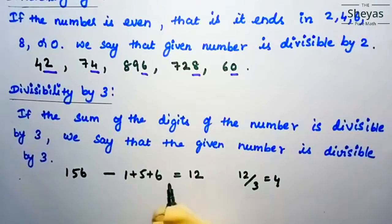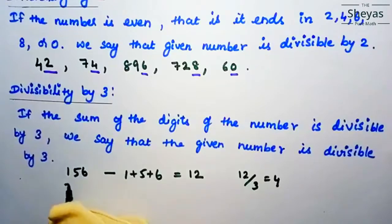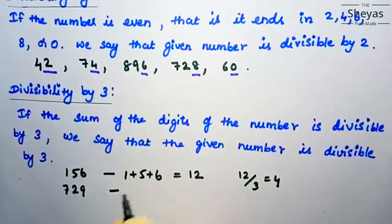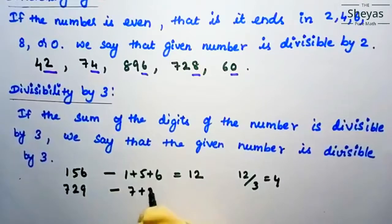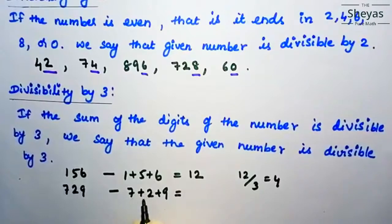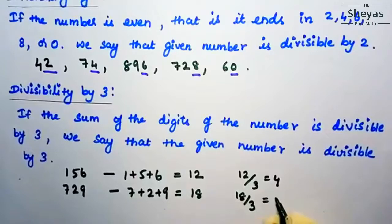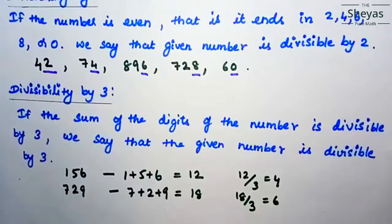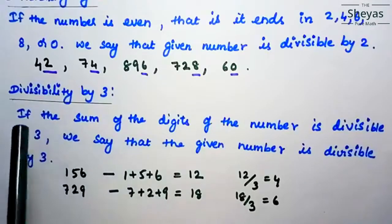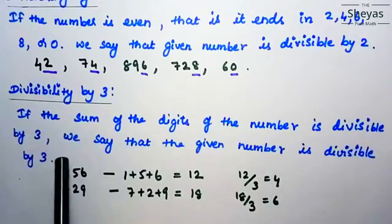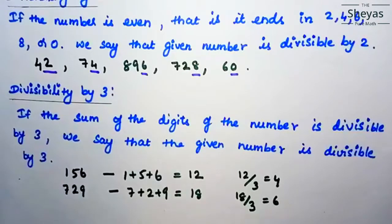Let us take one more example: 729. Add the digits: 7 plus 2 plus 9 equals 18. Now 18 divided by 3 is 6, so 729 is divisible by 3. Once again: if the sum of the digits is divisible by 3, we say the given number is divisible by 3. So 156 and 729 are both divisible by 3.